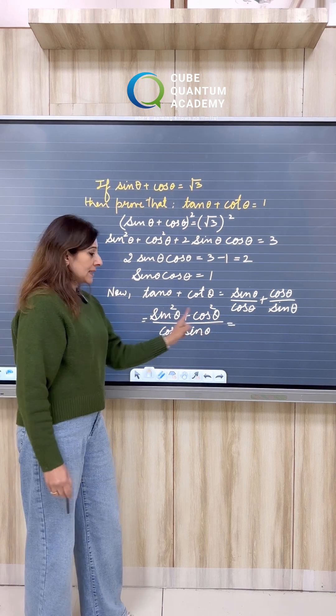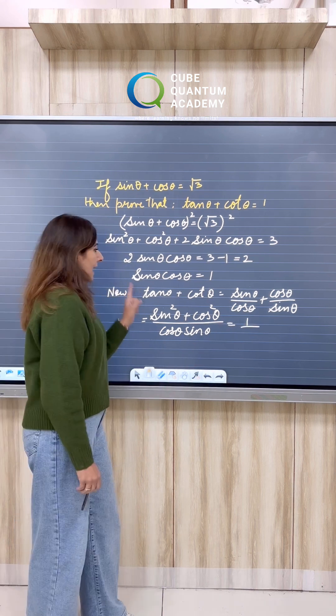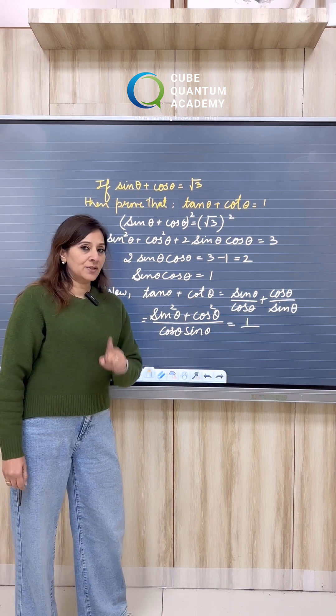Now, again we know that sin square theta plus cos square theta is equal to 1 and sin theta cos theta I have already found out which is equal to 1.